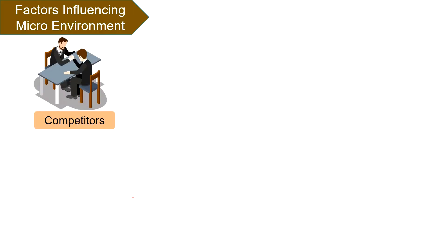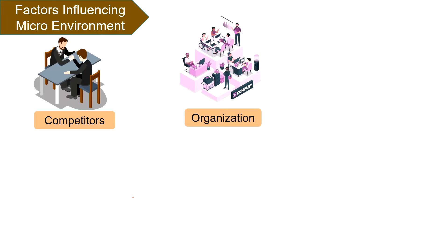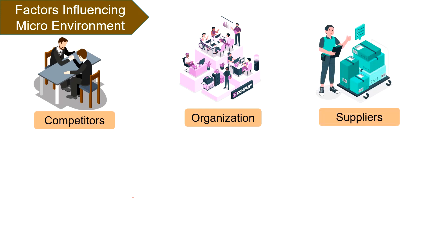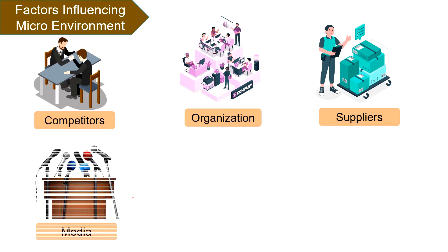Competitors are the business rivals which operate in the same industry, offering the same products and services and catering to the same audience. The firm itself is an aggregate of a number of elements like shareholders, investors, employees and board of directors. For carrying out the production process, raw material is required which is provided by the suppliers. Media plays an important role in the life of every company because it has the capability to make the company's product popular overnight or defame them in just one go.